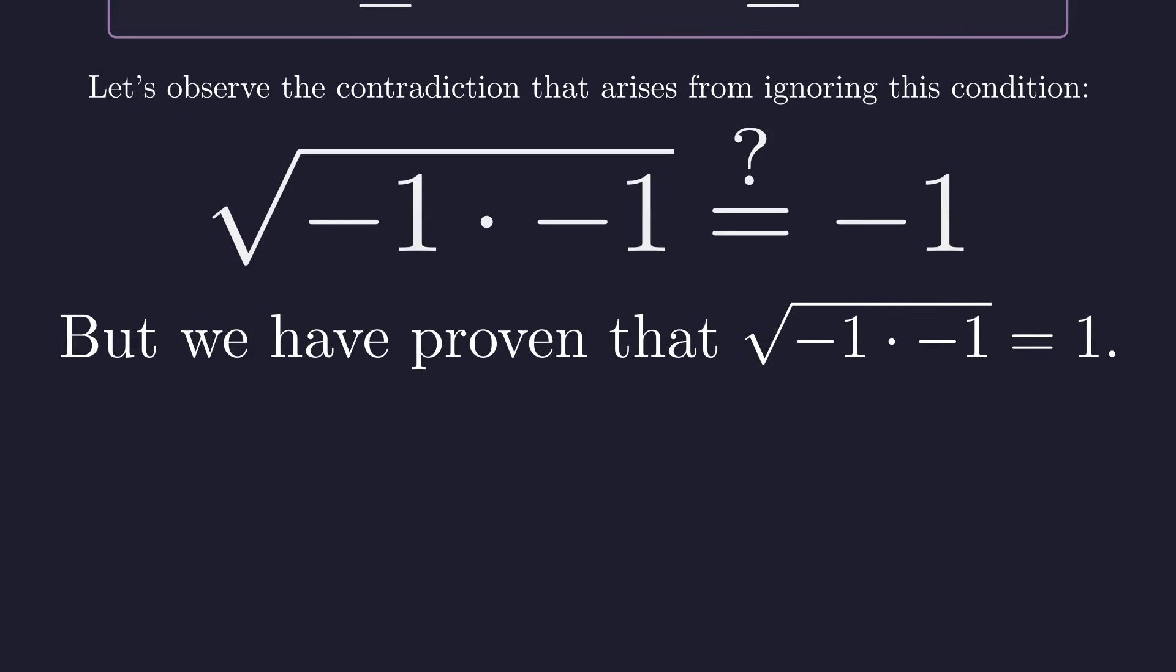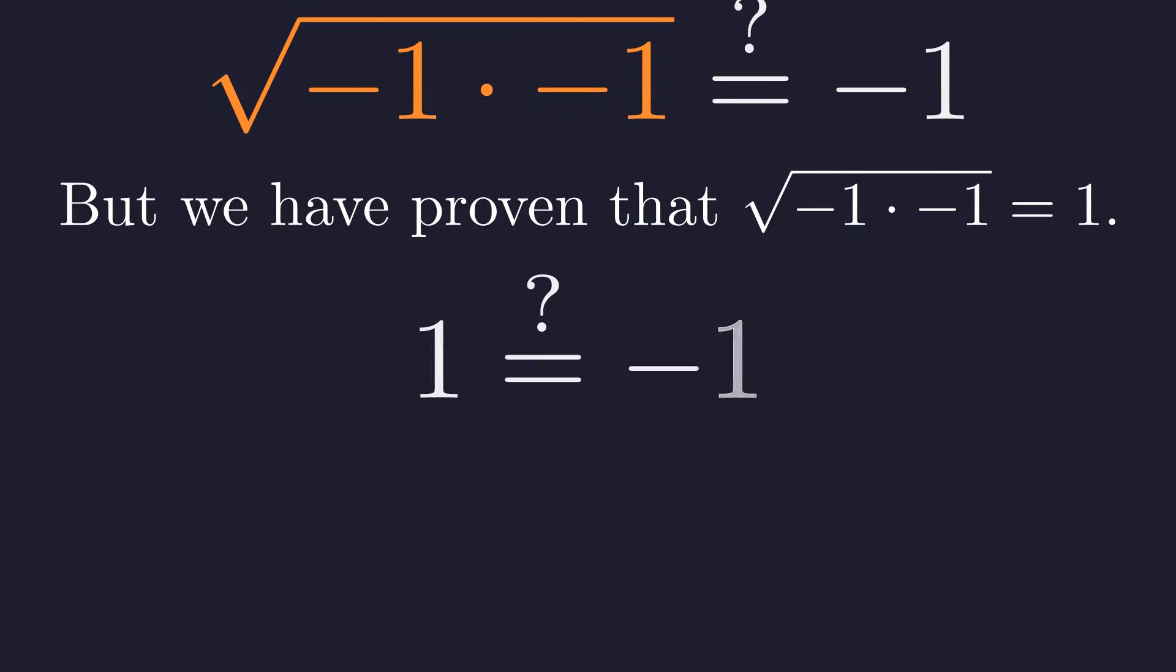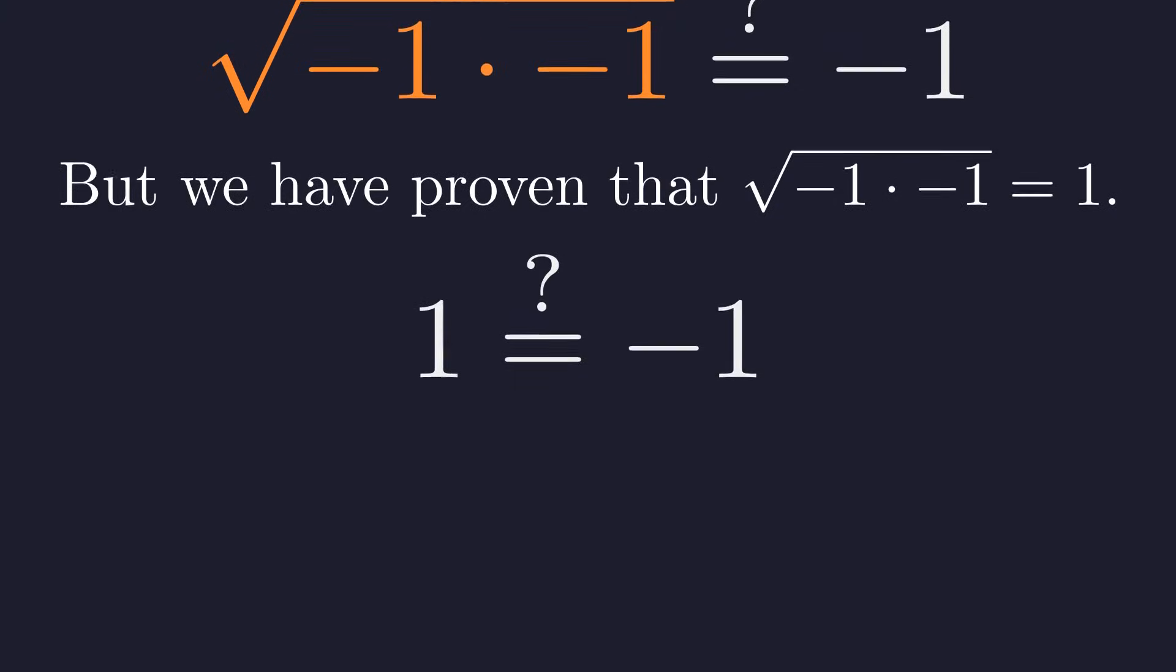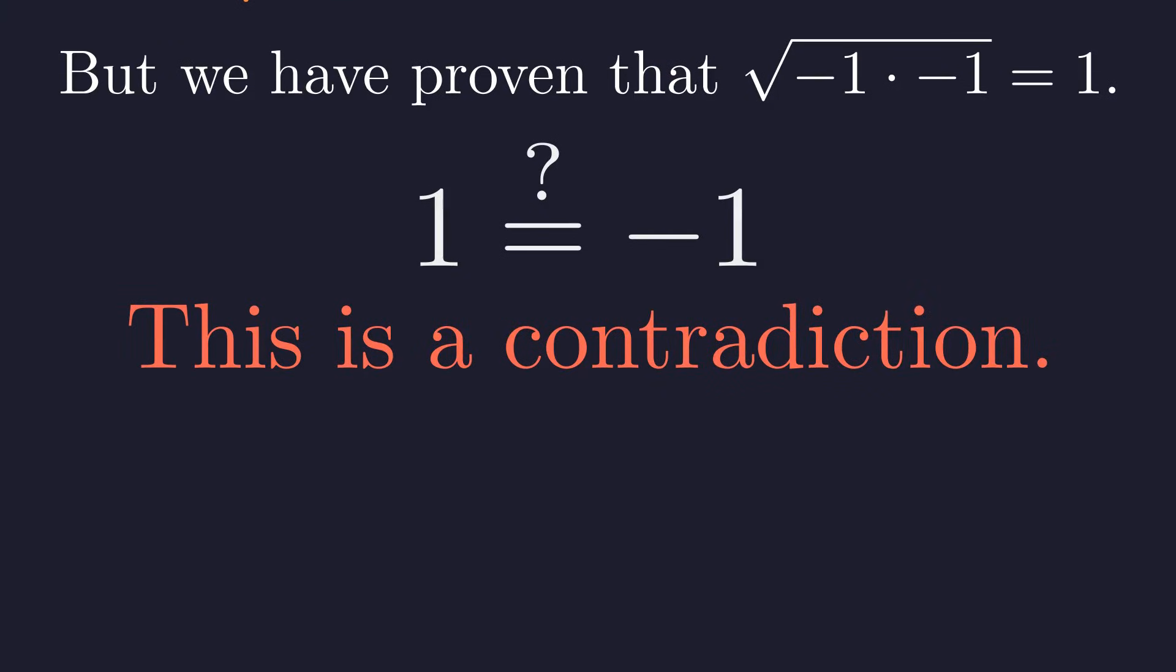But wait, we already know the left side equals positive one. So if we put that in, we'd be saying one equals negative one, which is obviously nonsense. The mistake was that step where we split the radical. That move simply isn't legal when we're dealing with negative numbers.